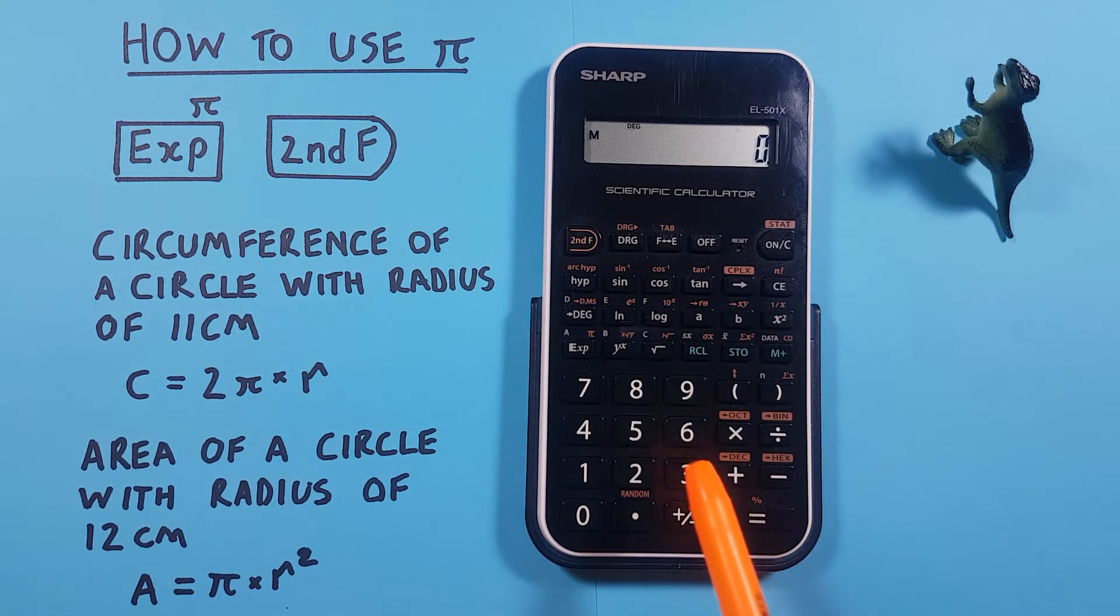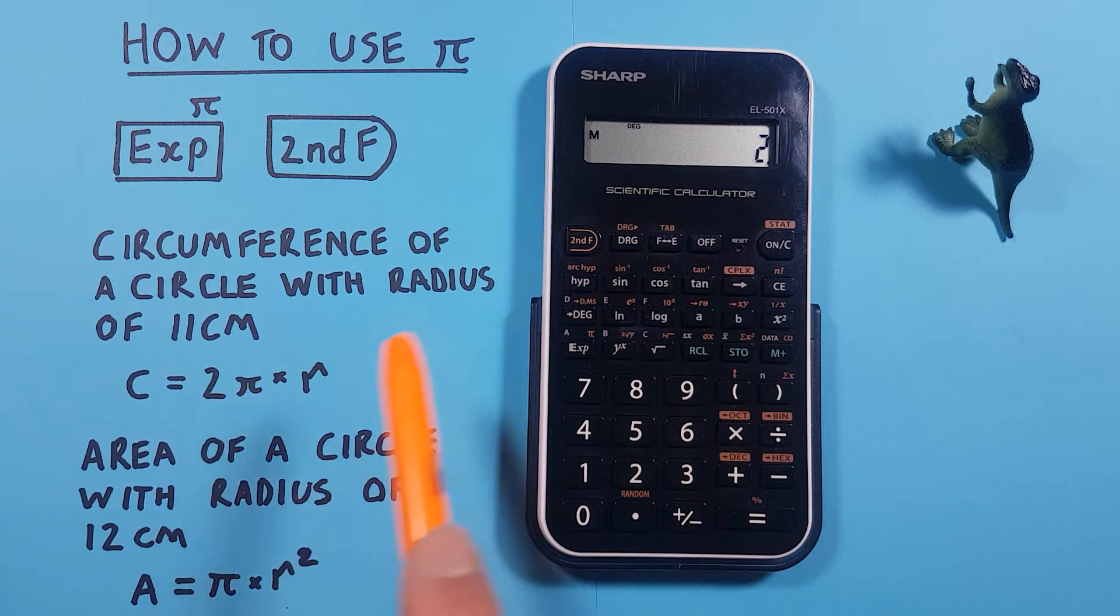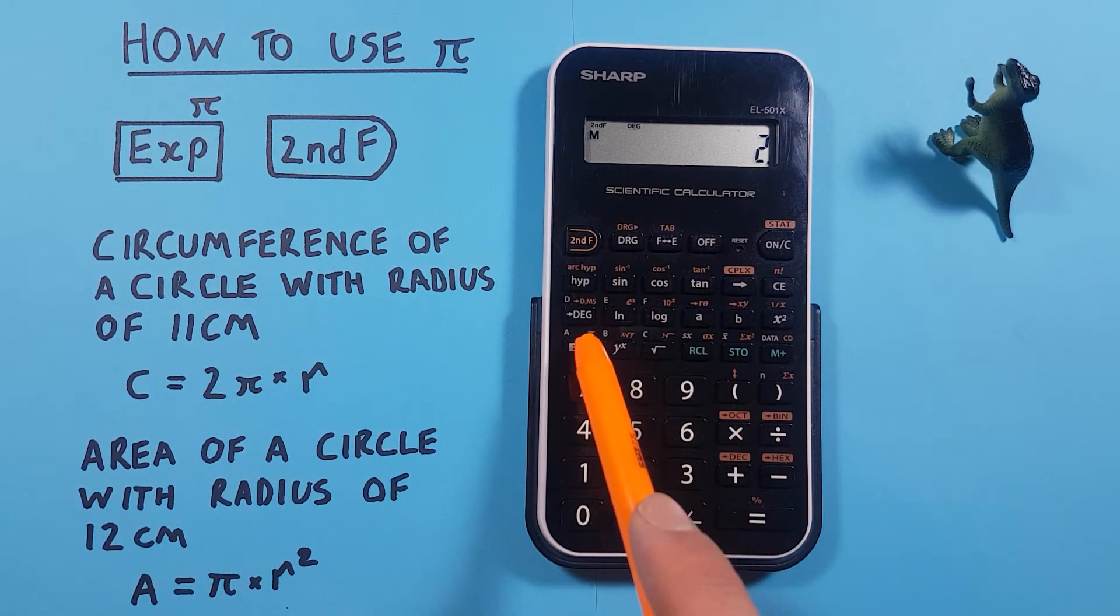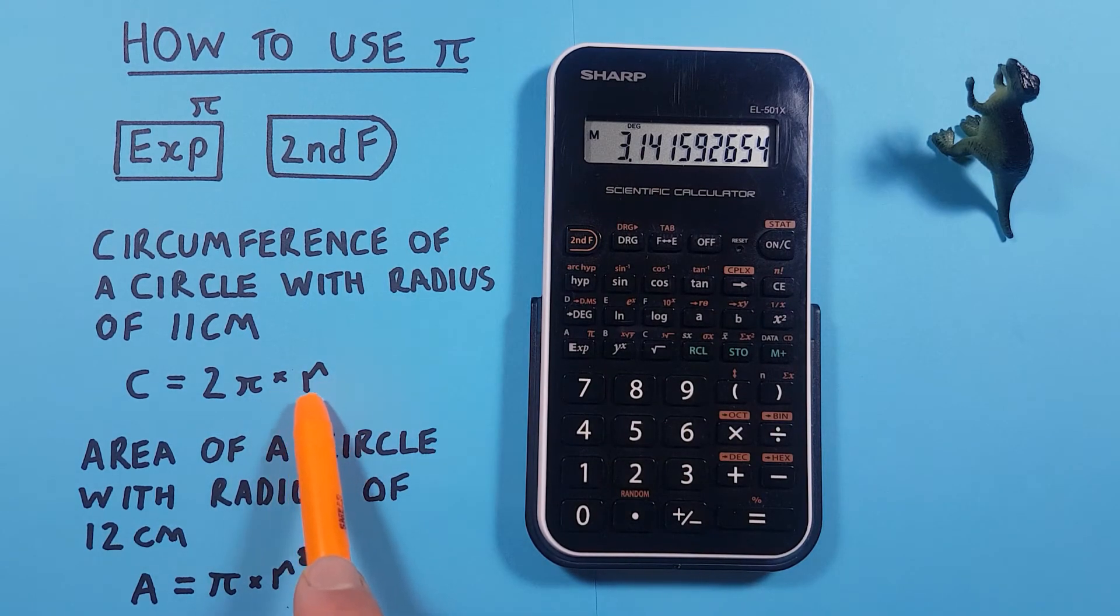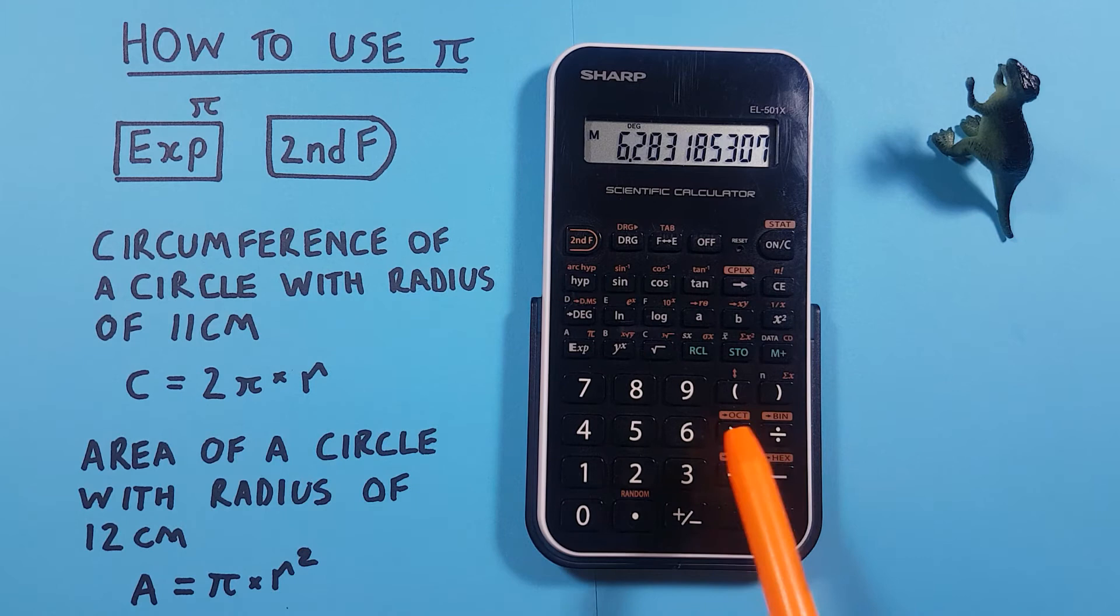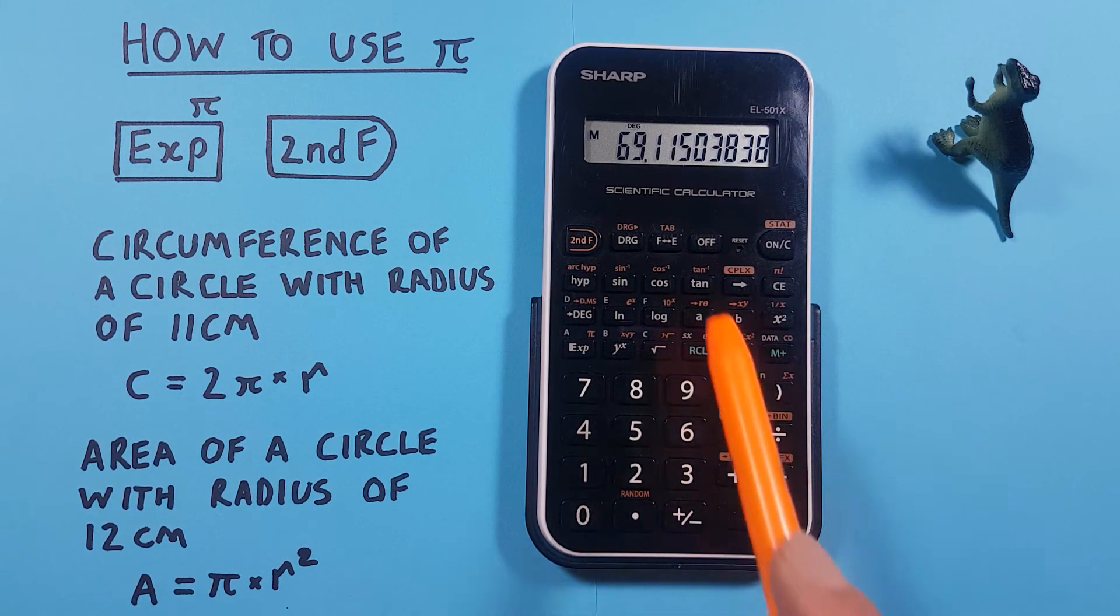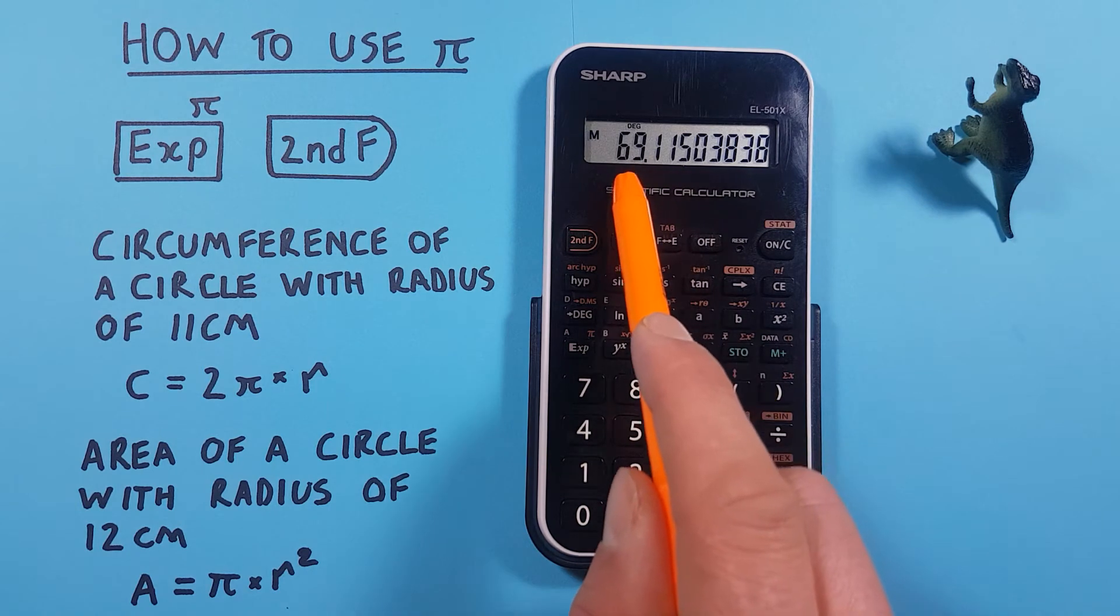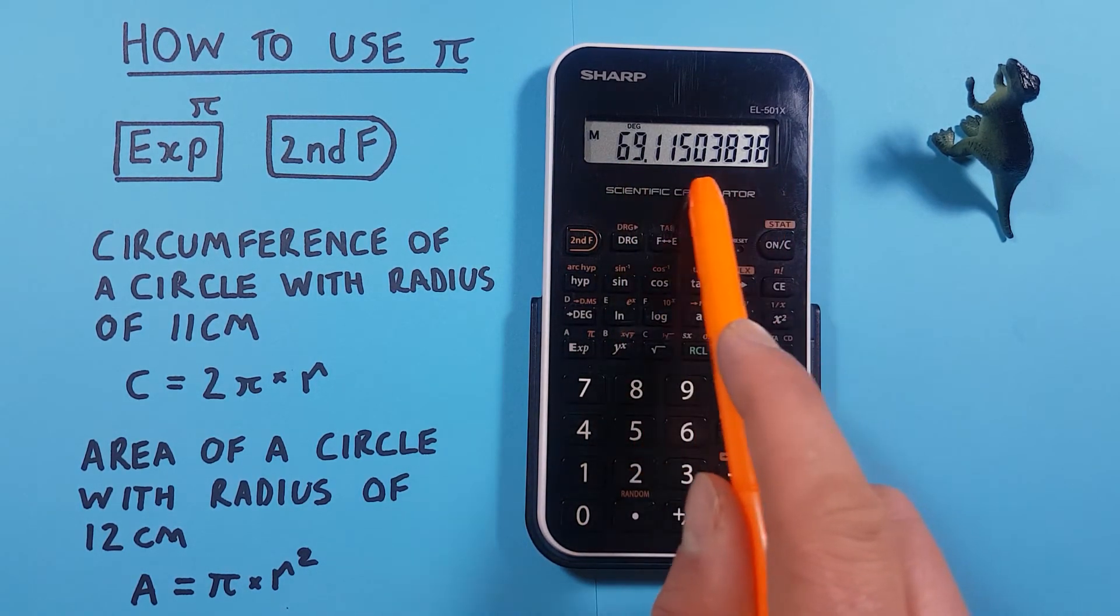So we can do this by going 2 times, now we need PI so we go second exp key, there's that PI, and then times our R or radius which was 11 centimeters. So we go times 11 and hit equals and you see we get an answer of 69.115, so that's our circumference.